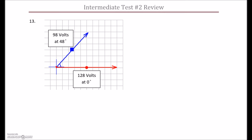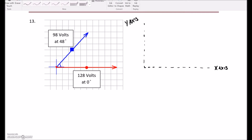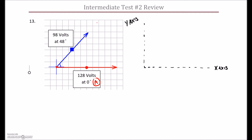I'm going to start off drawing in my x and y axes here, just so I can show the vector addition and leave that original drawing intact. Here we have the x-axis, here we have the y-axis, and I'm going to start off with this first vector, labeling it as vector A, starting at the point of origin and drawing it in sitting right on top of the x-axis. It has a value of 128 volts, sitting right at 0 degrees.